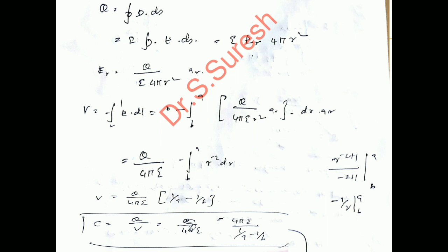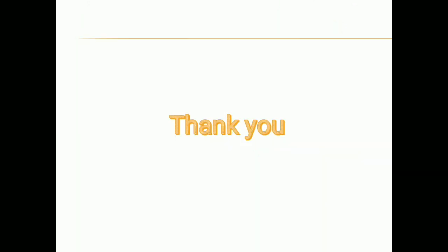The electric potential V equals minus the integral of E dot dl. Substituting E and using dl equals dr times a_r, integrating r to the power minus 2 gives minus 1/r. With the limits from b to a and accounting for the minus signs, V equals Q divided by 4pi epsilon times (1/a minus 1/b). Therefore, C equals Q divided by V equals 4pi epsilon divided by (1/a minus 1/b). This is the capacitance value for the spherical capacitor.